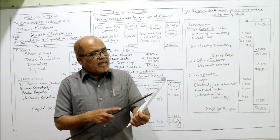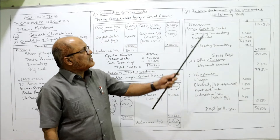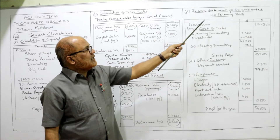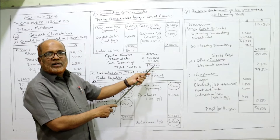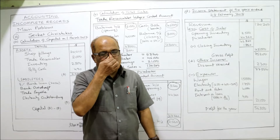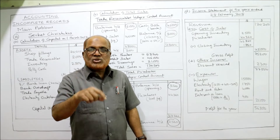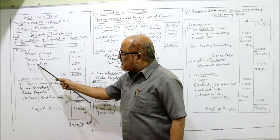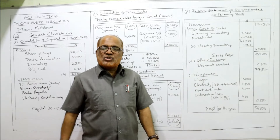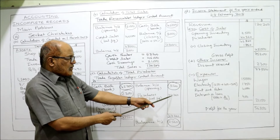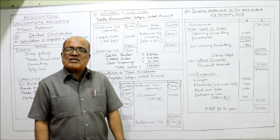Now we prepare the Income Statement for the year ended 28th February 2018. Revenue (sales) = $120,200. Cost of sales = opening inventory plus purchases minus closing inventory. Opening inventory = $2,500; purchases = $44,360; closing inventory = $1,860. Cost of sales = $2,500 + $44,360 minus $1,860 = $45,000.